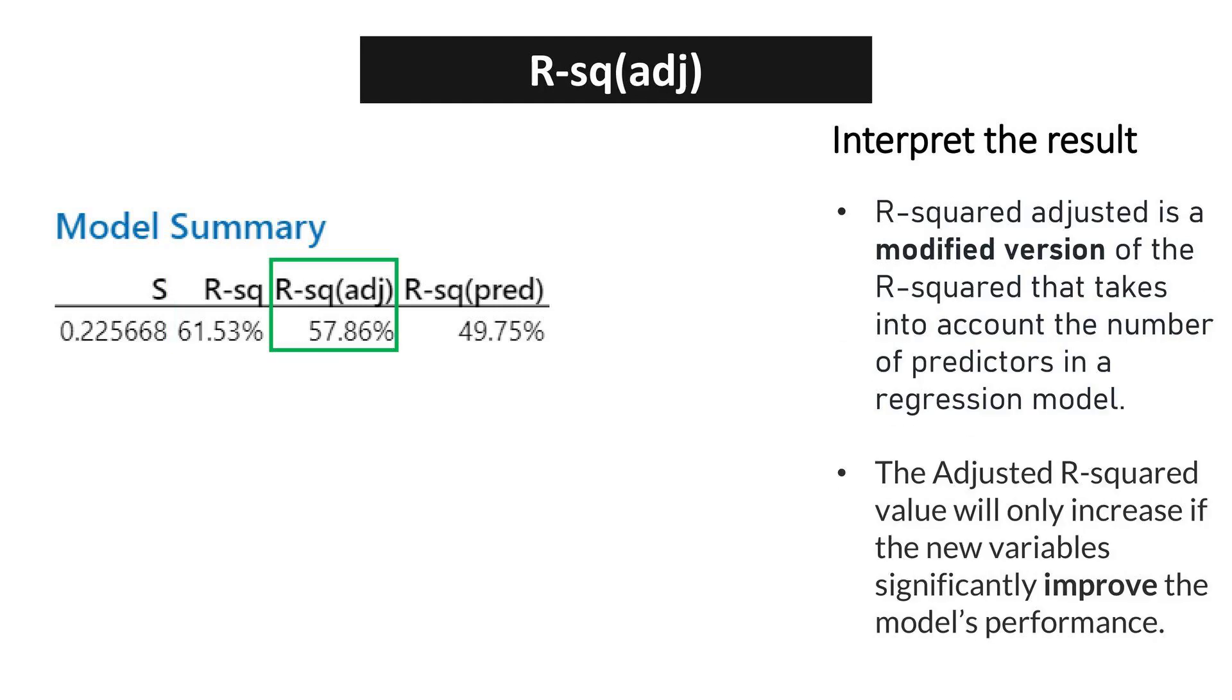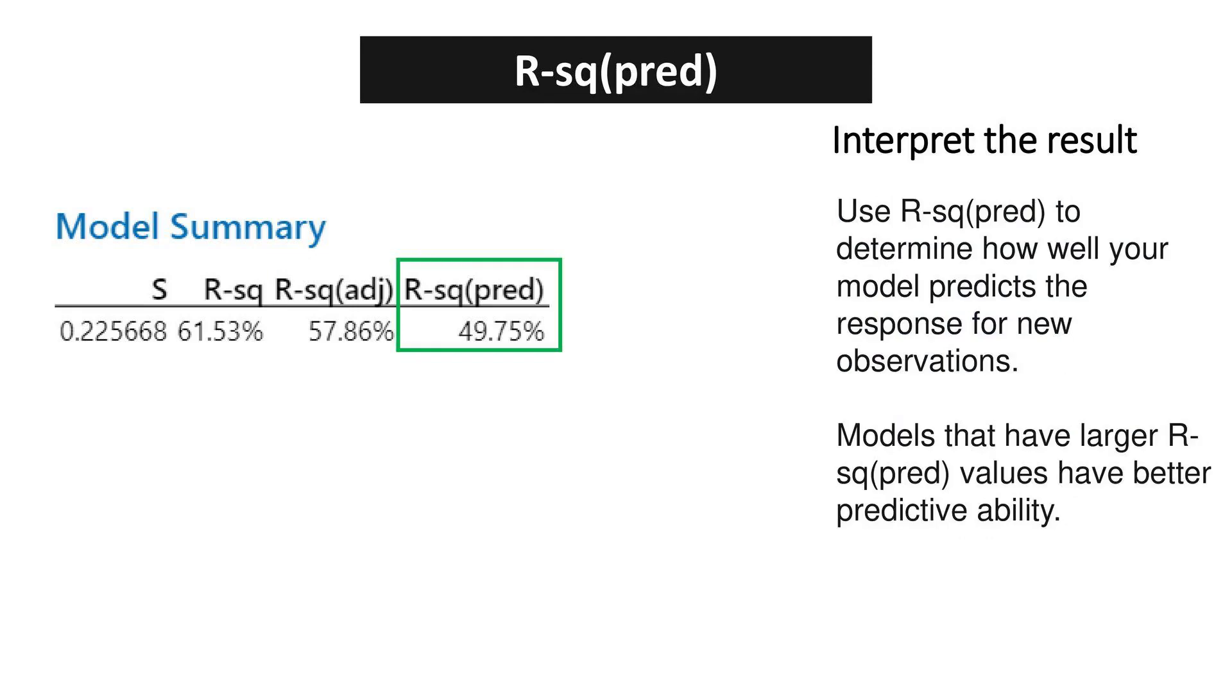R-squared adjusted is a modified version of R-squared that takes into account the number of predictors in a regression model. The adjusted R-squared value will only increase if the new variables significantly improve the model's performance. Use R-squared predicted to determine how well your model predicts the response for new observations. Models that have larger R-squared predicted values have better predictive ability.